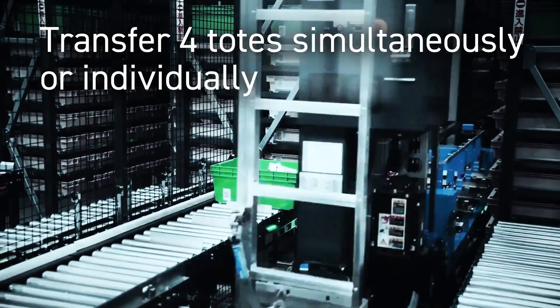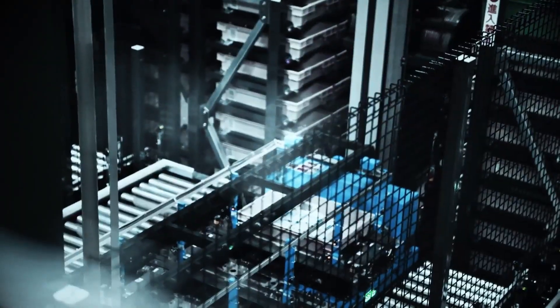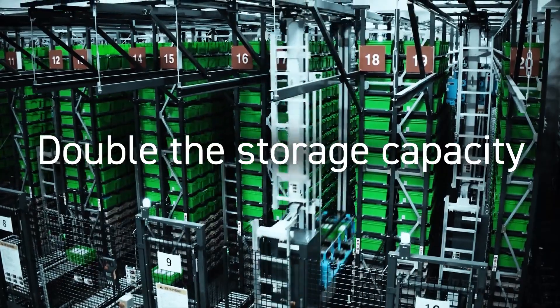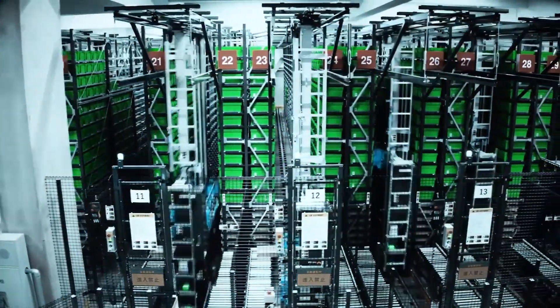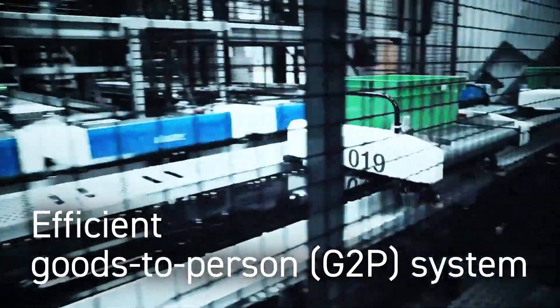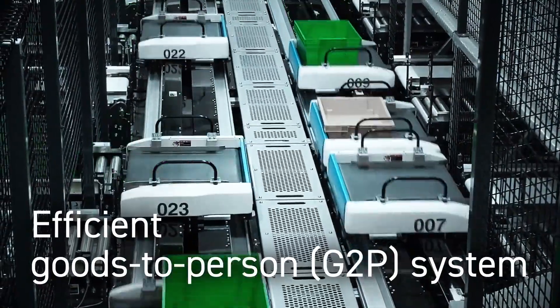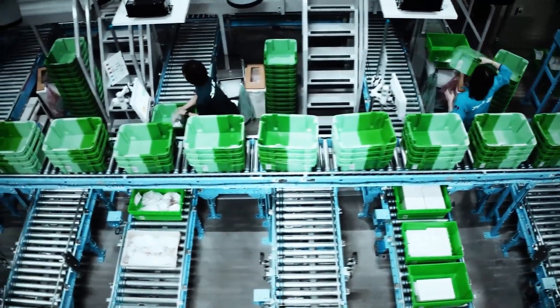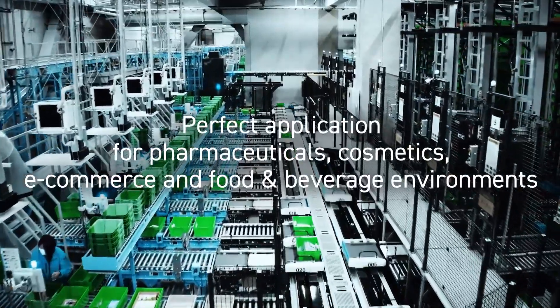The Ledger A3 MiniLoad system can transfer up to four totes of small goods simultaneously, doubling the storage and shipping capacity of conventional systems. By combining it with the Shutliner, a highly efficient, optimized G2P system is created with increased throughput, making it an ideal solution for pharmaceuticals, consumer goods, and small parts manufacturing.